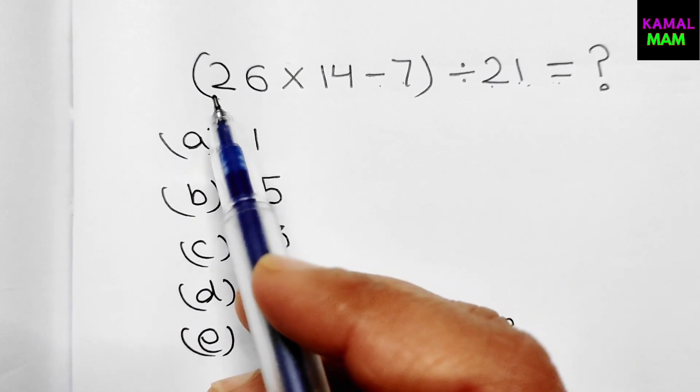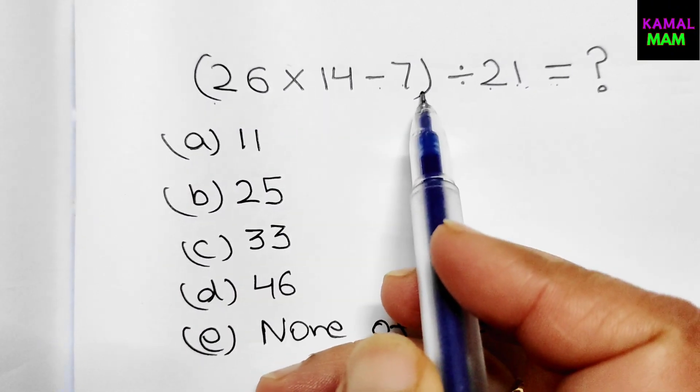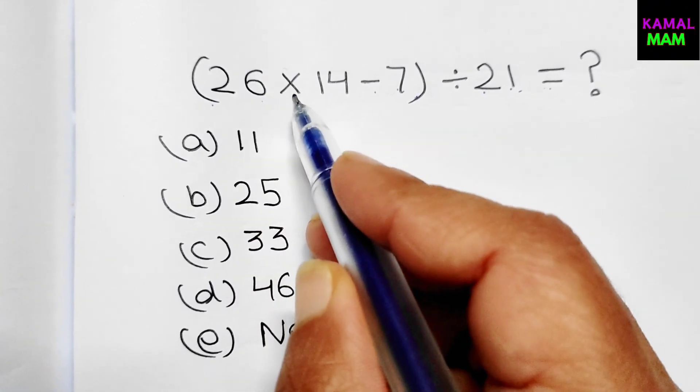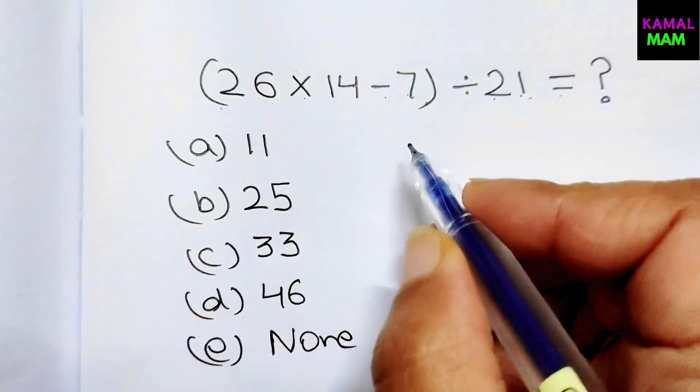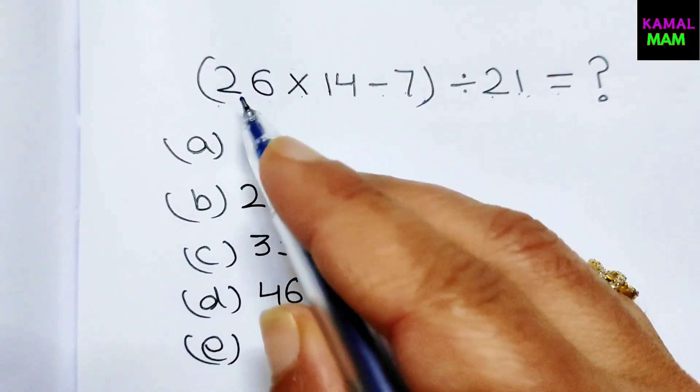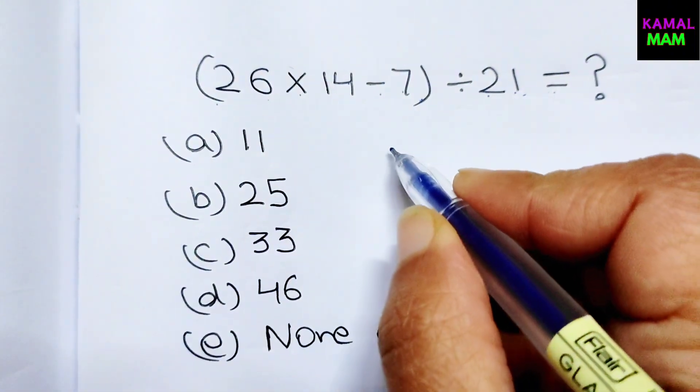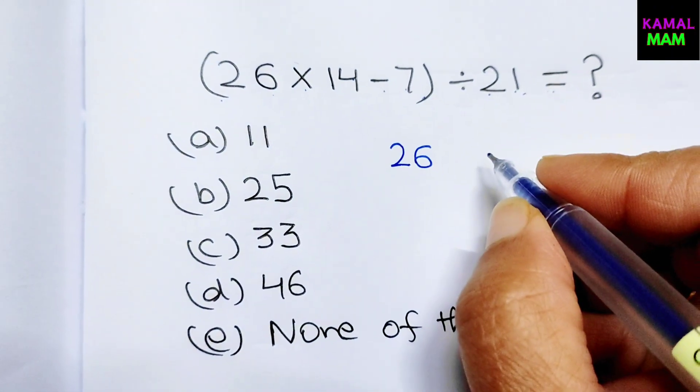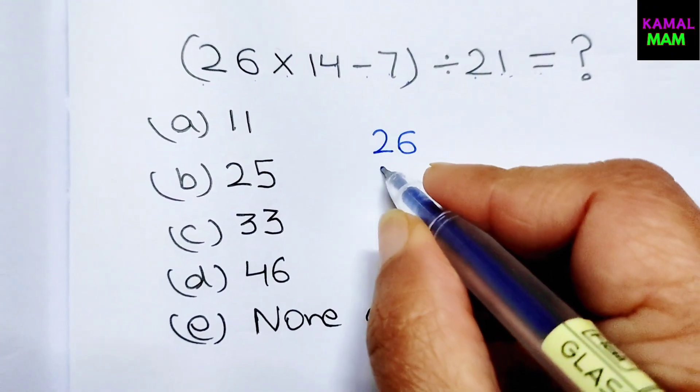Firstly solve the bracket. Here it's 26 multiply it with 14. I have a nice trick to solve the multiplication problem. Here first it's 26 multiply it with 14.